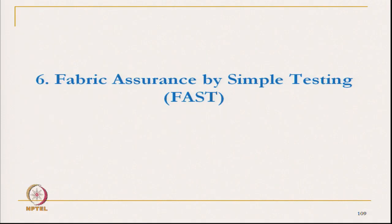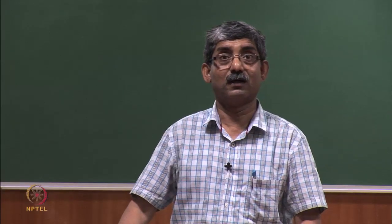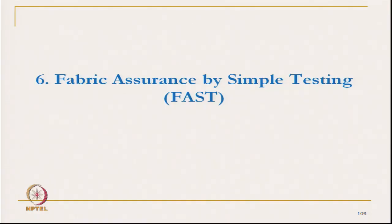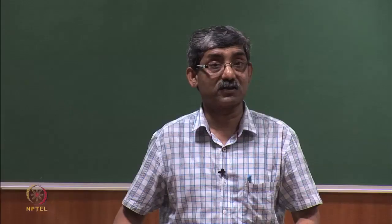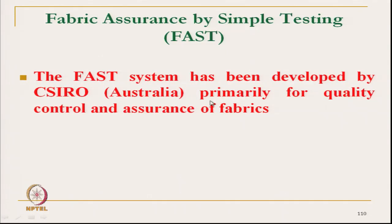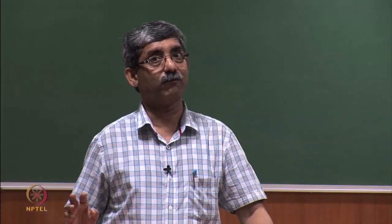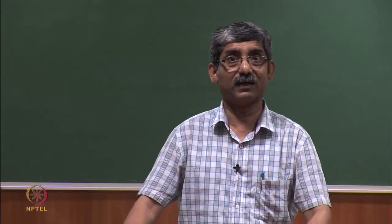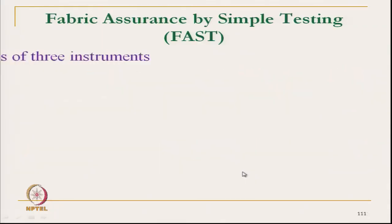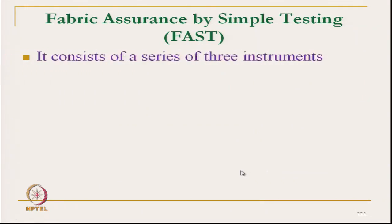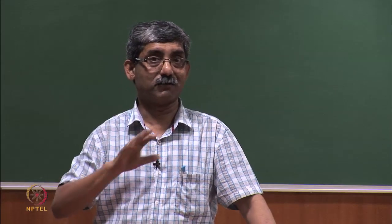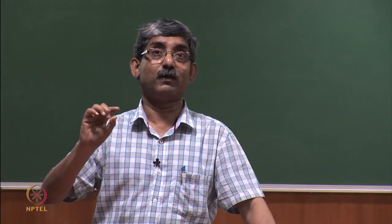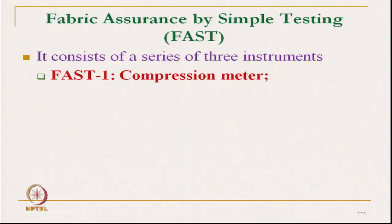Now we will start another set of instruments — the FAST instruments. This first instrument was developed by CSIRO Australia, primarily for quality control and quality assurance purposes. But indirectly we can use this for measuring fabric tactile responses — it gives an indication of fabric handle. The instruments are very simple, but the analysis from this data is very informative. With a very simple measurement we can get a wide range of information.